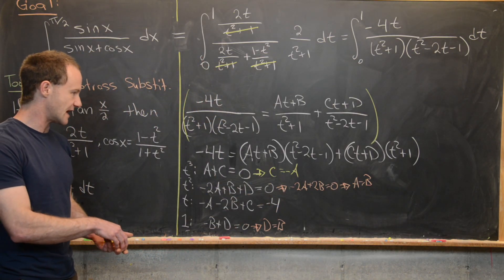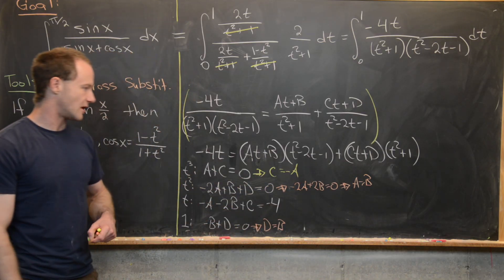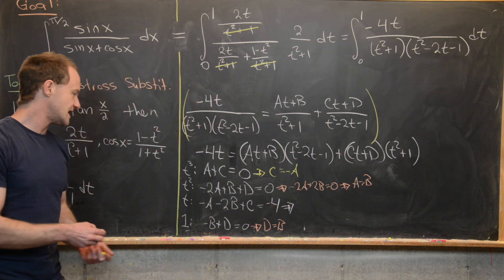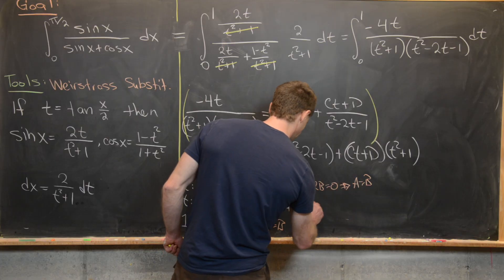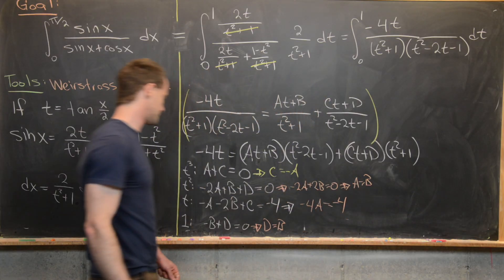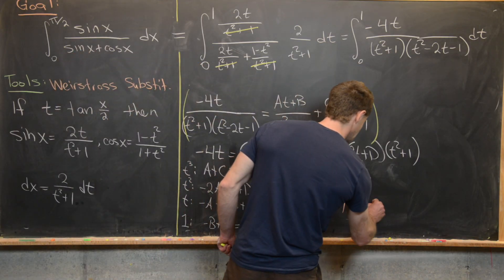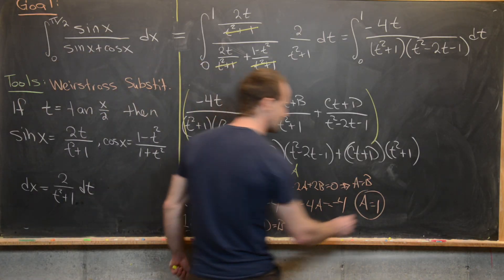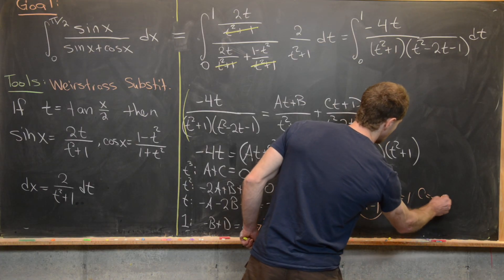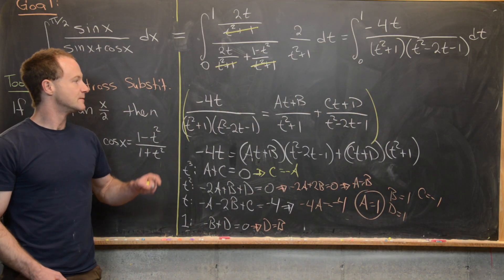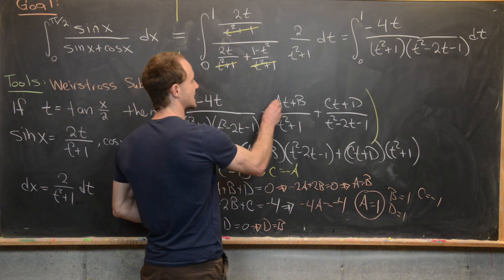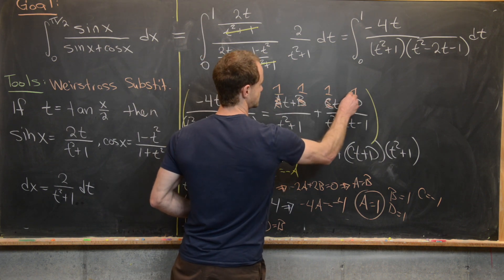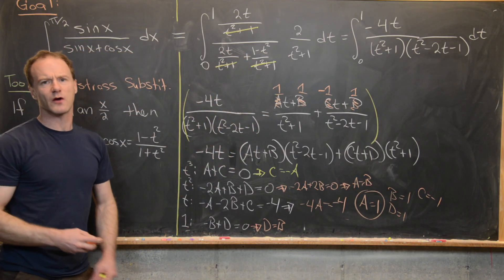With a, b, and d all equal and c equal to minus a, the t-coefficient equation becomes minus a minus 2a minus a equals minus 4a equals minus 4, so a equals 1. Therefore b equals 1, d equals 1, and c equals minus 1. We now substitute these values back into the partial fraction decomposition to rewrite the integral.